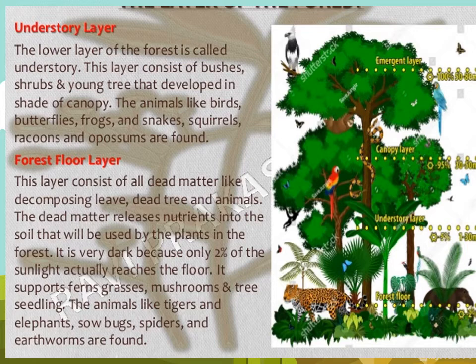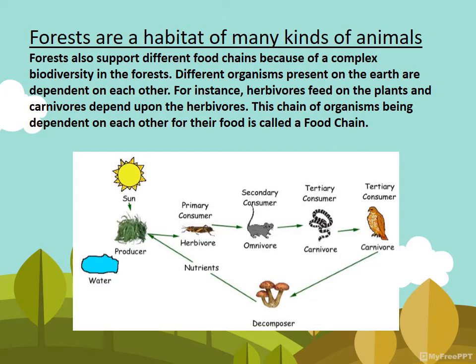Animals like tigers, elephants, spiders, and earthworms are found in the forest floor layer. The forest is a habitat for many animals and forms a food chain. It provides favorable environmental conditions, food, and shelter to a variety of wild animals. Forests support different food chains because of the complex diversity in the forest. Herbivores feed on plants and carnivores depend on herbivores — this chain of organisms dependent on each other for food is called a food chain.